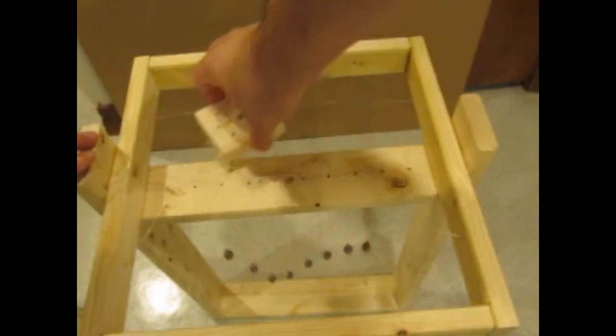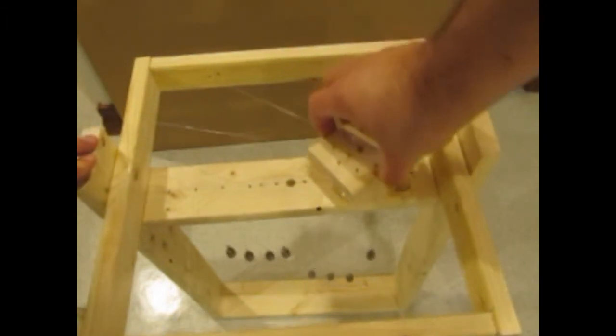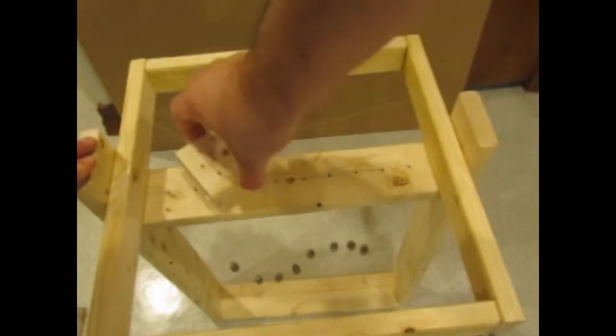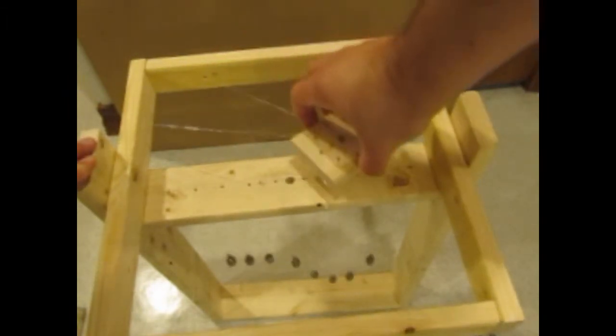All the strings go through the top square and through the board at the top of the fixture, then down to the weights.